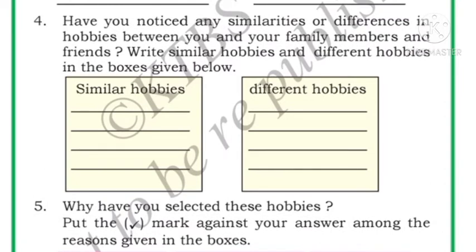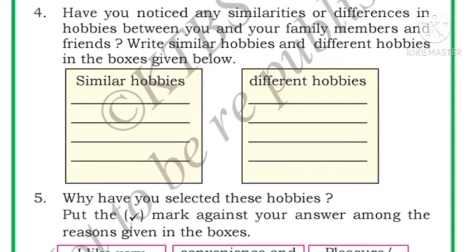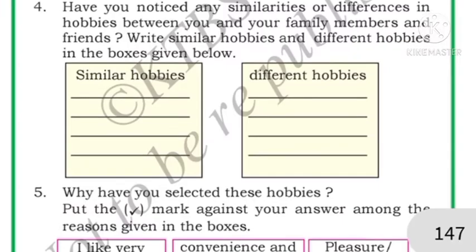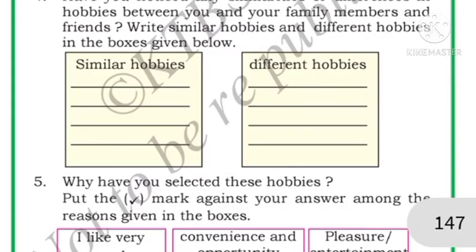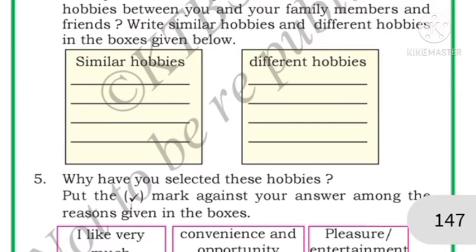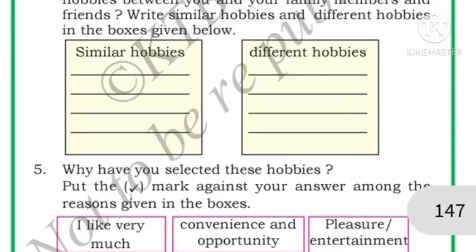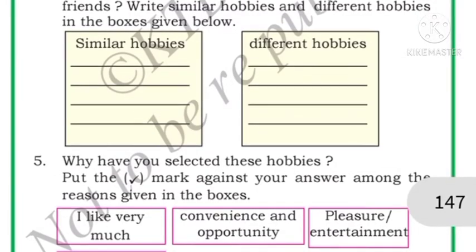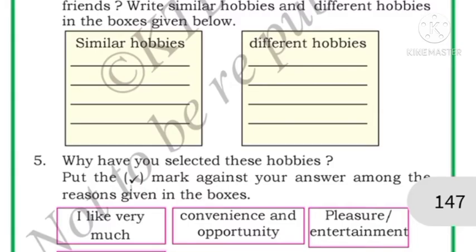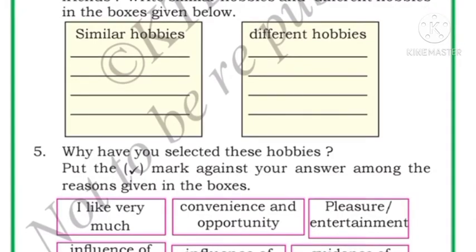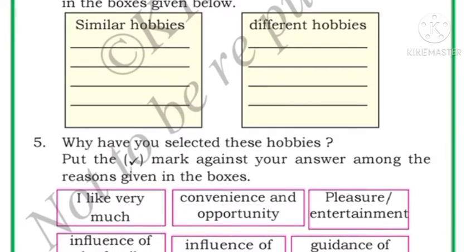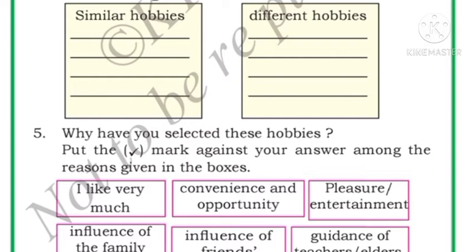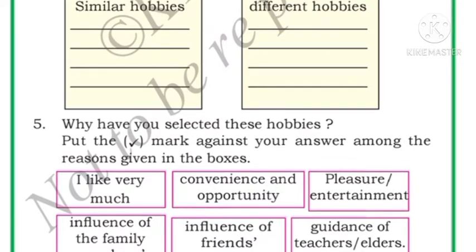Why have you selected these hobbies? Put a tick mark against your answer. First: I like it very much. Or: convenience and opportunity — you have the convenience and opportunity. Or: pleasure and entertainment — you are doing it for pleasure and entertainment. Or: influence of family members' hobbies. Or: influence of friends' hobbies. Or: guidance of teachers and elders. Put a tick mark against the box of your answer.